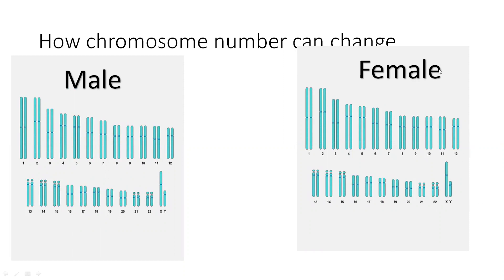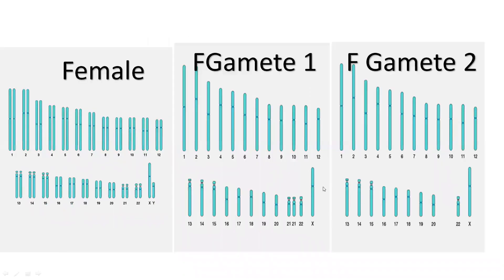Consider this male with 23 pairs of chromosomes and this female. The female gametes will be formed as Gamete 1 and Gamete 2. Looking at the difference: in Gamete 1, the 21st pair did not separate. The 21st pair in Gamete 1 did not separate, so in Gamete 2, the 21st pair will be empty — no chromosome on the 21st pair — because it did not separate and stayed in Gamete 1.